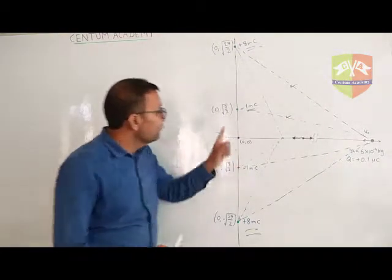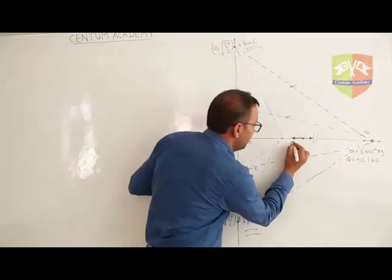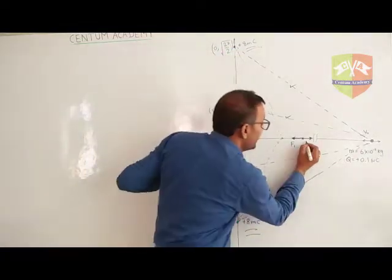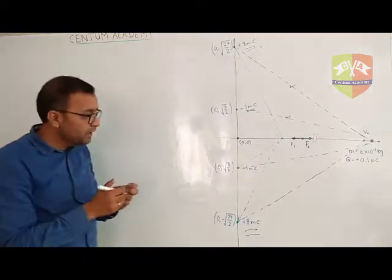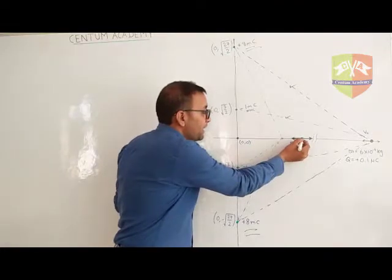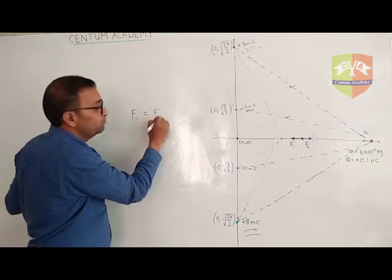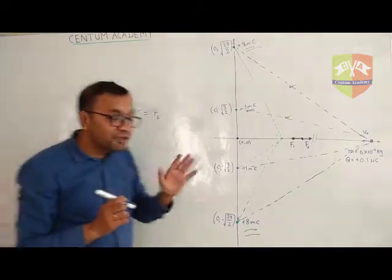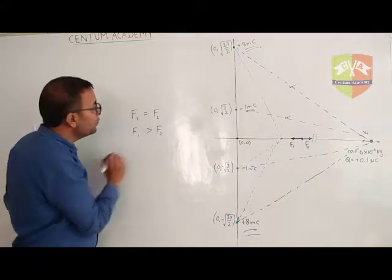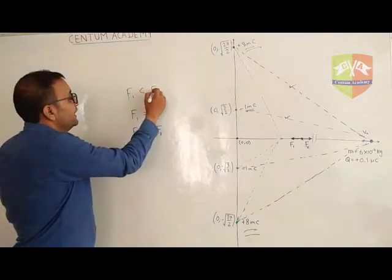Suppose the force of attraction because of the minus one milliCoulomb charges is F1, and the force of repulsion because of the plus eight milliCoulomb charges is F2. Now, if there is a point along this axis for which F1 equals F2, then after that point F1 will be greater than F2, and before that point F1 was less than F2.